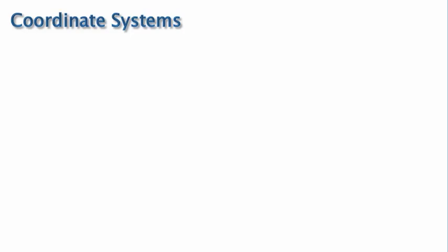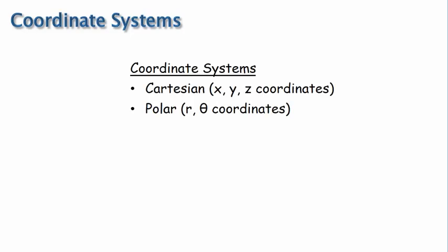We will use two different coordinate systems in this course, Cartesian and Polar. The Cartesian coordinate system is the one most people are familiar with, that involves x, y, and z coordinates. The Polar coordinate system involves r and theta coordinates instead of x, y, z.